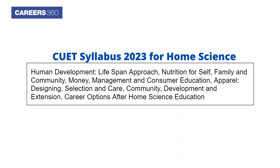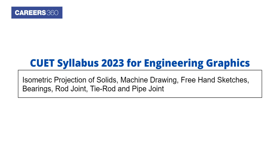CUET syllabus 2023 for home science includes: human development, lifespan approach, nutrition for self, family and community, money management and consumer education, apparel designing, selection and care, community development and extension, and career options after home science education.